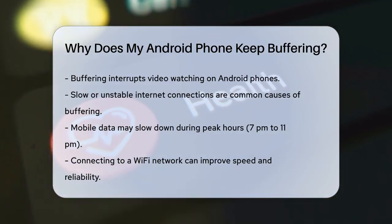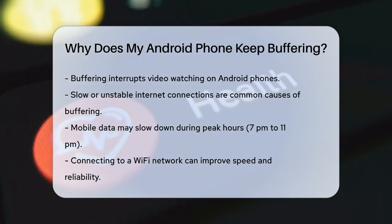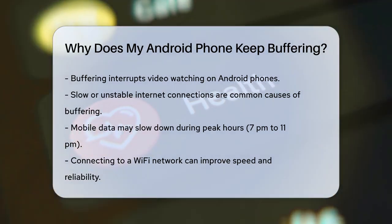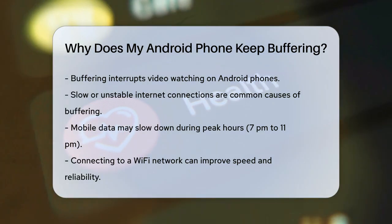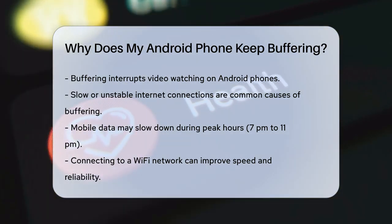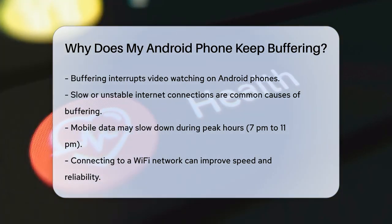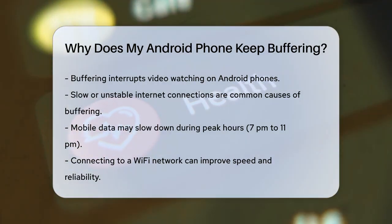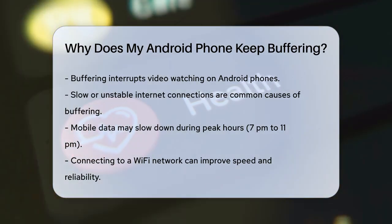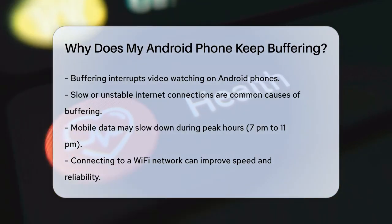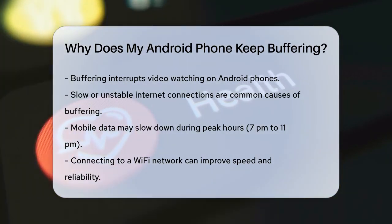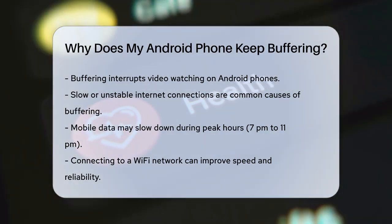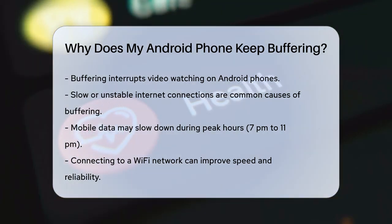First, buffering often occurs due to a slow or unstable internet connection. If you're using mobile data, you might experience slow speeds or interruptions, especially during peak hours like 7 p.m. to 11 p.m. when many people are streaming. To address this, try connecting your phone to a Wi-Fi network. Wi-Fi is generally faster and more reliable than mobile data.